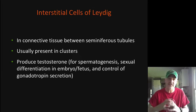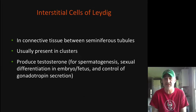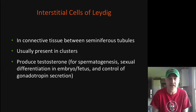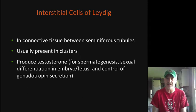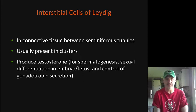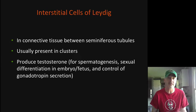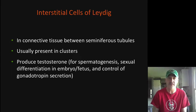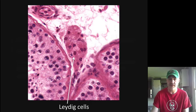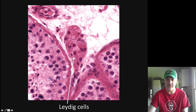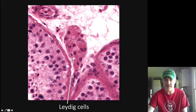In between each of the seminiferous tubules are interstitial cells of Leydig, or Leydig cells, usually found in a cluster. These cells are responsible for responding to LH and generating testosterone. That testosterone helps in sperm cell development as well as giving all those secondary sex characteristics found in males. You can see the edges of the seminiferous tubules and this group of cells in the center — those are the Leydig cells.